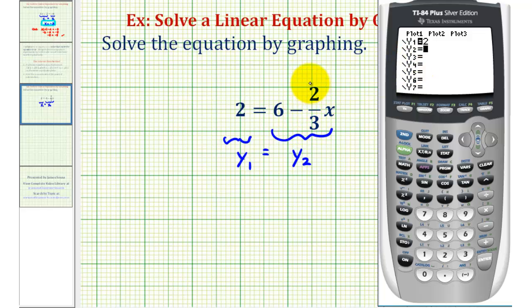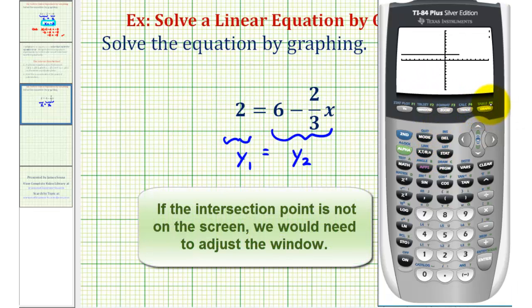And then for y2, I'm going to put the 2 thirds in parentheses. So we'll have 6 minus 2 thirds x. And we'll press graph. So there's y1, there's y2, and again the x-coordinate of this point of intersection would be the solution to the equation.